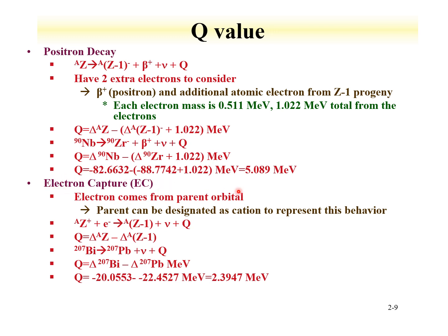We can do the same calculation for electron capture. In this case the electron comes from the parent orbital, a proton is converted into a neutron, and a neutrino is emitted. Since the electron is absorbed by the parent, the charge is neutralized and we don't need to worry about electron mass. The Q value is just the mass of the parent minus the progeny mass. For electron capture of bismuth-207 to lead-207, the Q value is 2.3947 MeV.